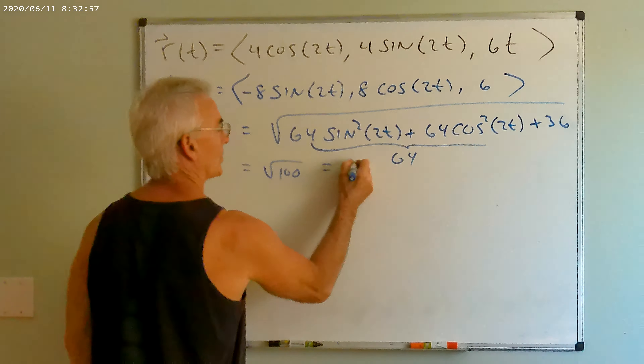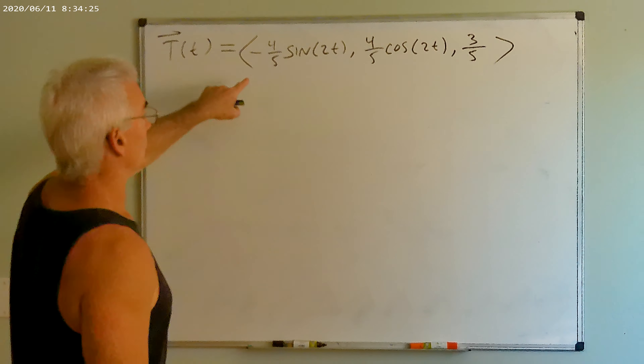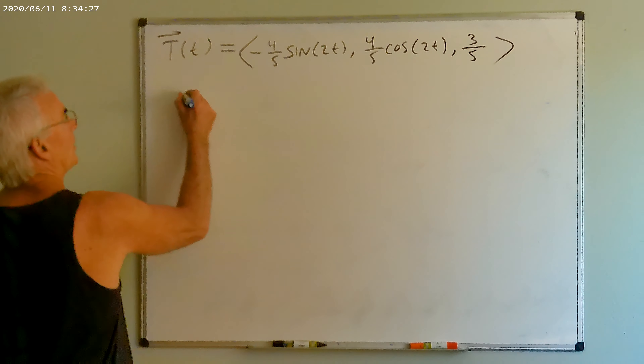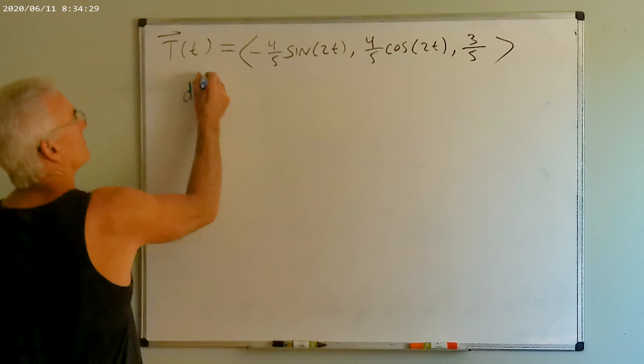The normal vector is a little bit trickier. We proved before that if a vector has constant length — and the unit tangent will have constant length because it's a unit vector — then it must be orthogonal to its derivative. So if I consider the vector dT/dt, I know that this vector dotted with T(t) has to be zero. That means the normal vector is going to point in the direction of dT/dt. Since this is not generally a unit vector, we define the unit normal vector to be the unit vector in that direction.